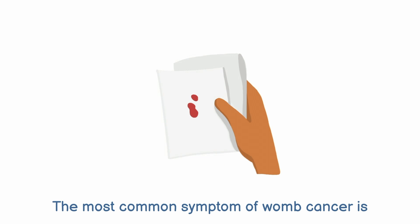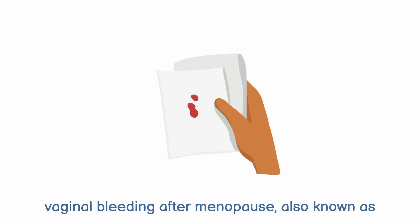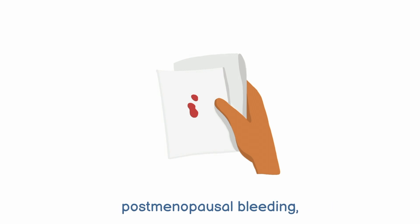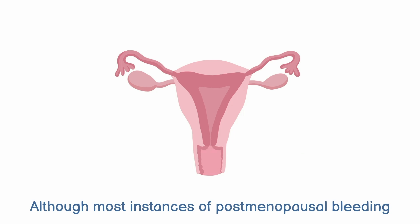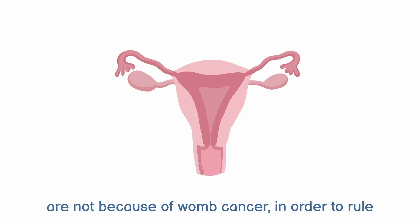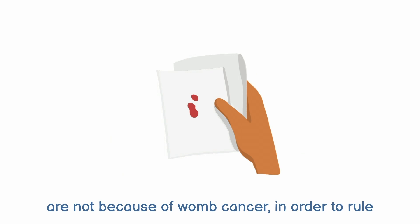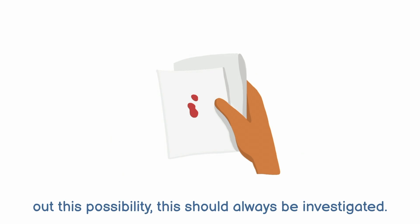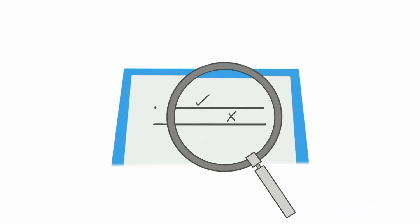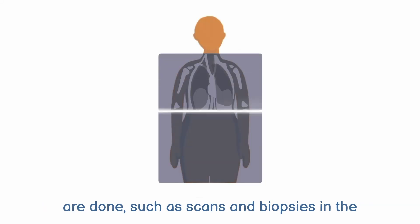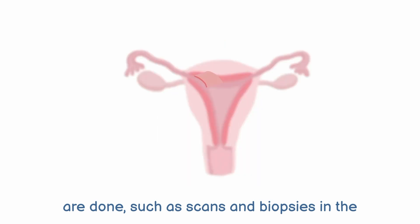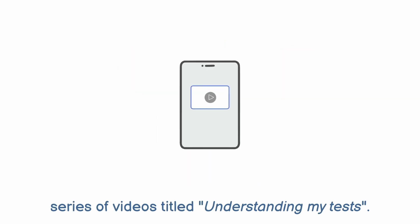The most common symptom of womb cancer is vaginal bleeding after menopause, also known as postmenopausal bleeding, which should be reported to your doctor. Although most instances of postmenopausal bleeding are not because of womb cancer, in order to rule out this possibility, this should always be investigated. You can find out more about the investigations that are done, such as scans and biopsies, in the series of videos titled Understanding My Tests.